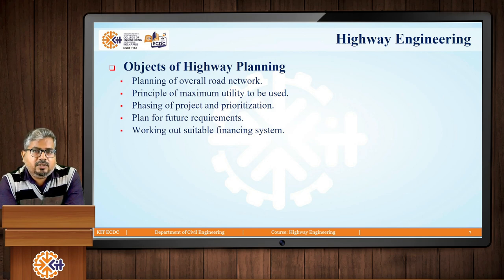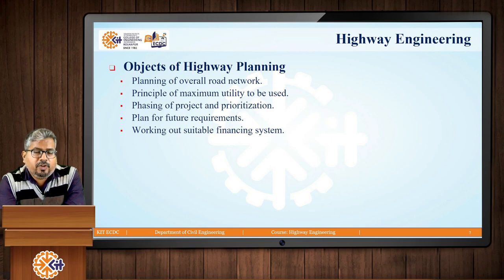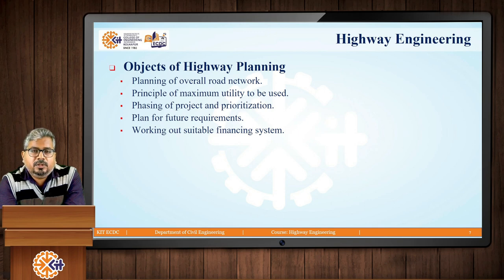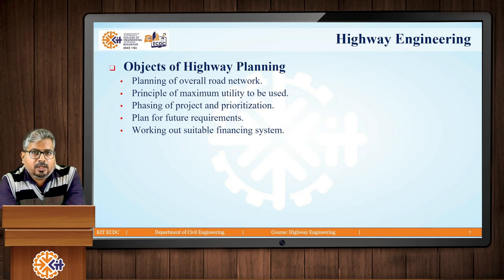Then we have working out a suitable financing system. Here we have to look for government agencies that can provide funding for development and maintenance of the road network. Along with that, we can consider imposing toll tax or user fees collected from road users as revenue, which will also help in maintenance, construction, or repair work of the road.